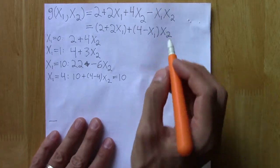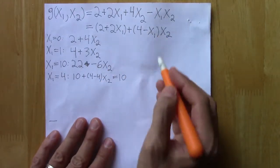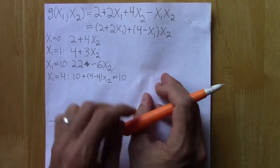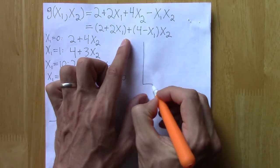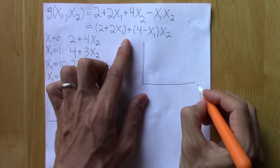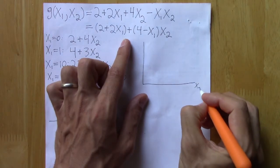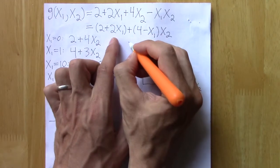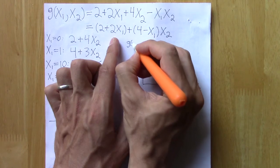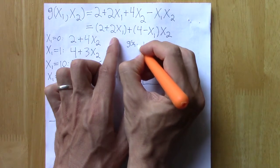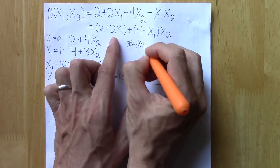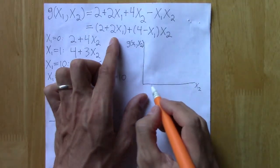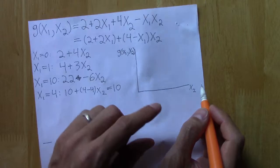And you could imagine, at least in these simple cases where there are only two regressors, we could plot these different functions. So again, we're thinking of g as a function of a fixed x₁, and then whatever x₂ is over here.